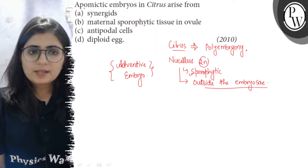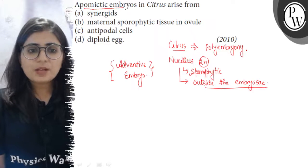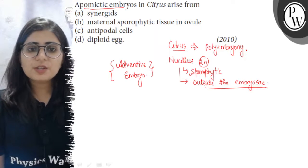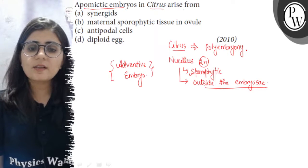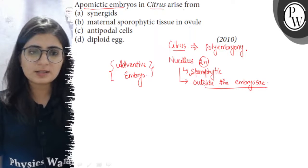Apomictic embryos are formed without fertilization. These are found in citrus, and such embryos in citrus arise from the cells of nucellus.